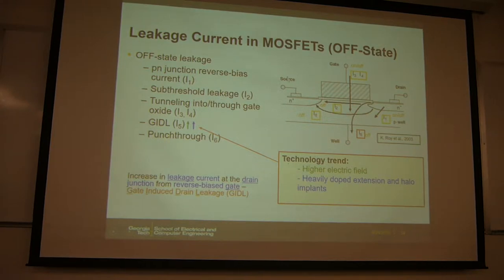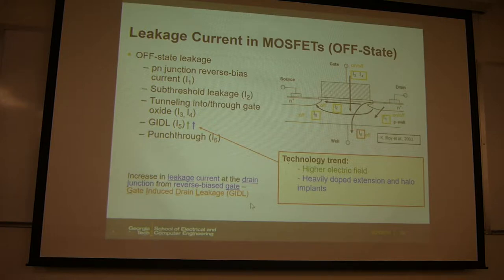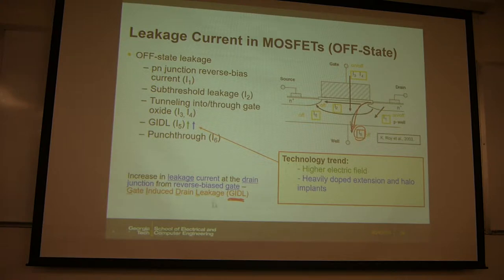Here is another chart for the leakage current mechanisms in the cell. The same kinds of current paths apply, but I want to highlight this one. In this figure it becomes number five, and it's called GIDL — short for Gate-Induced Drain Leakage, GIDL.